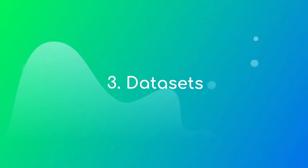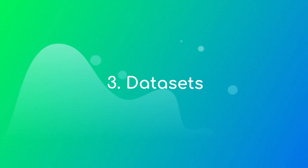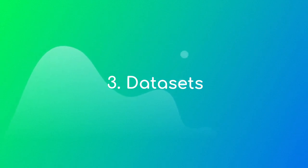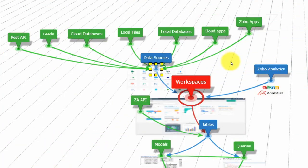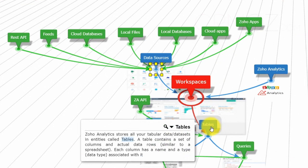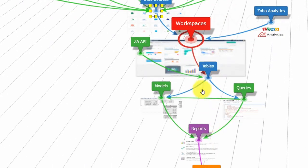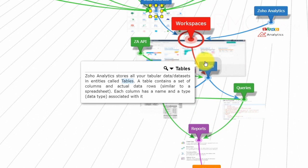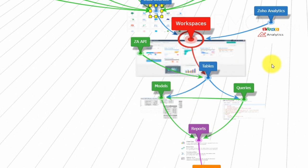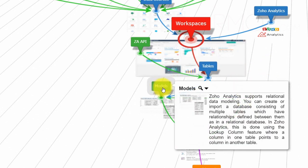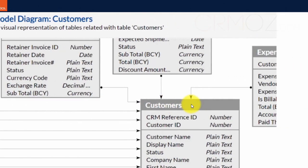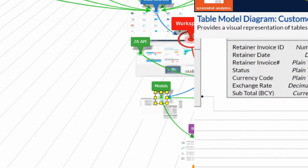Datasets. A dataset is a storage of data that looks like an Excel sheet. Datasets may contain static data or be periodically updated from a corresponding data source. Zoho Analytics stores all your tabular datasets in entities called tables. A table contains a set of columns and actual data rows. Each column has a name and a data type associated with it. A Zoho Analytics database could contain a collection of tables. Two tables could be related to each other using lookup columns, thus enabling you to model a relational workspace.